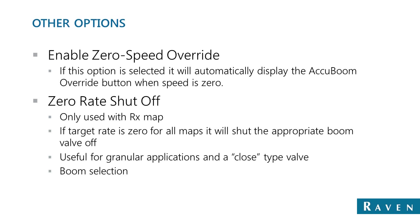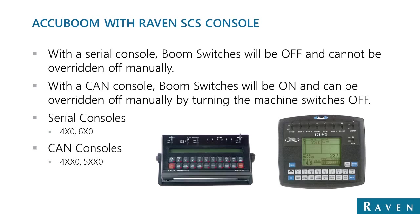Another setting is the zero-speed override, which adds a pop-up to the screen when you hit zero speed. This is handy if you do a lot of start-stops or have many corners you're starting from and don't want to go into settings to turn on the override. For granular applications and guys using RX Maps, there's a zero-rate shutoff that turns your AccuBoom section off if any zones have a zero value in them.